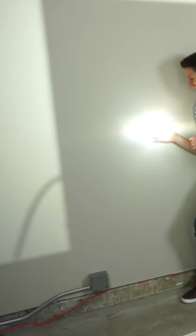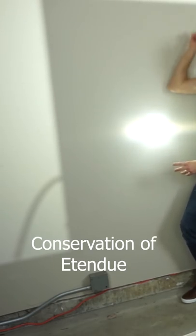No matter what configuration we do with mirrors or lenses, we can't concentrate the light to be brighter or hotter than the initial source of the light. This fact is called conservation of étendue.